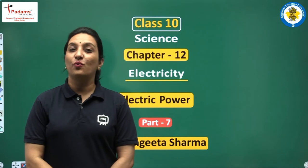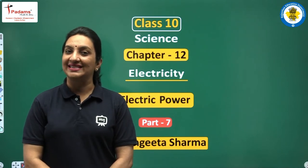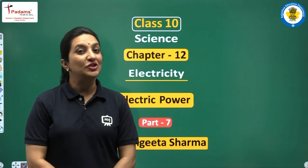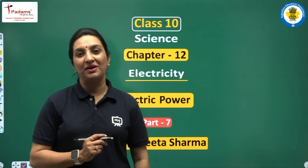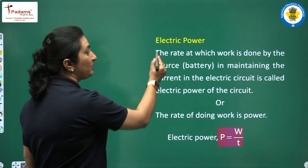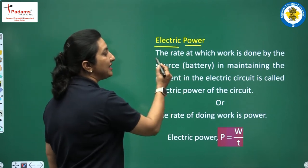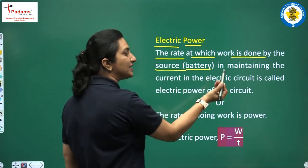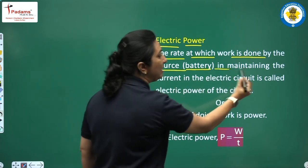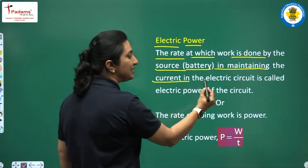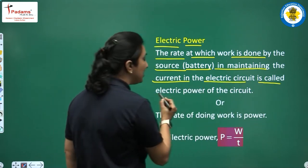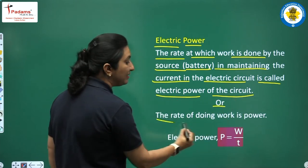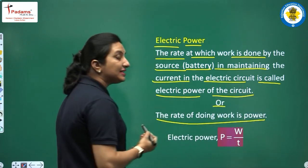Students, all of you know what power is — the rate of doing work is known as power. Electric power is the rate at which work is done by the source, which is a battery, cell, or power supply, in maintaining the current in the electric circuit. This is called electric power of the circuit.